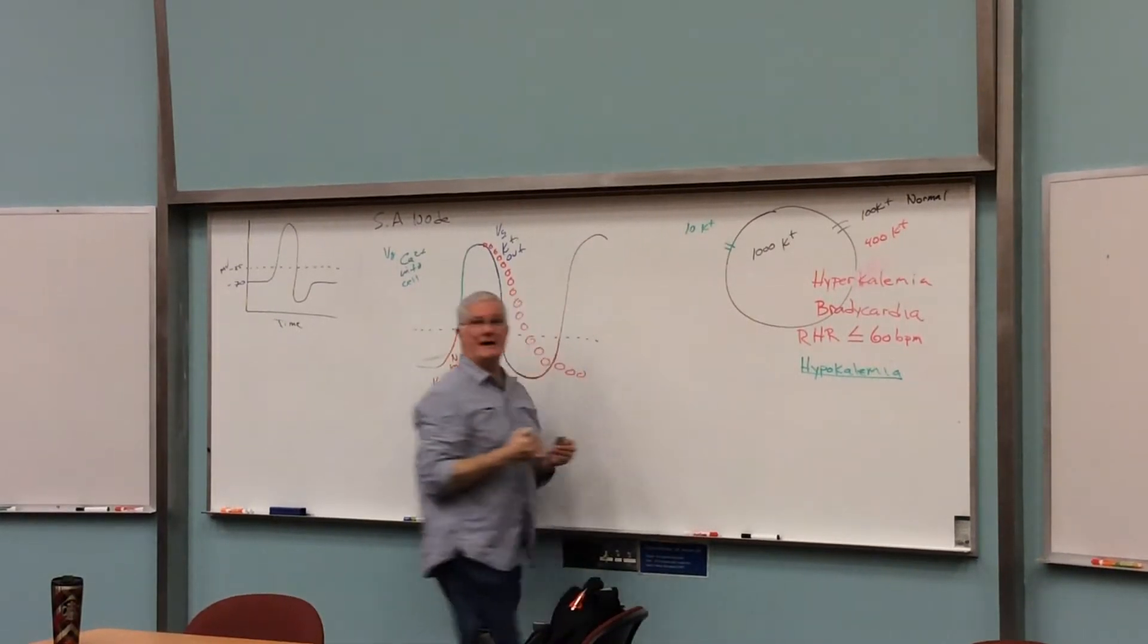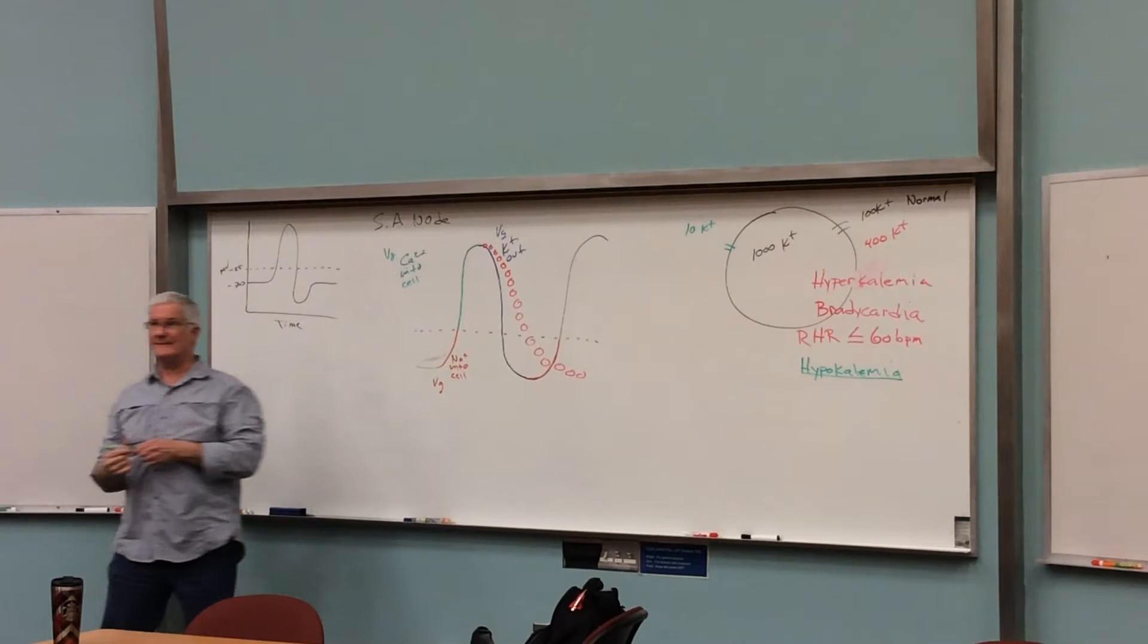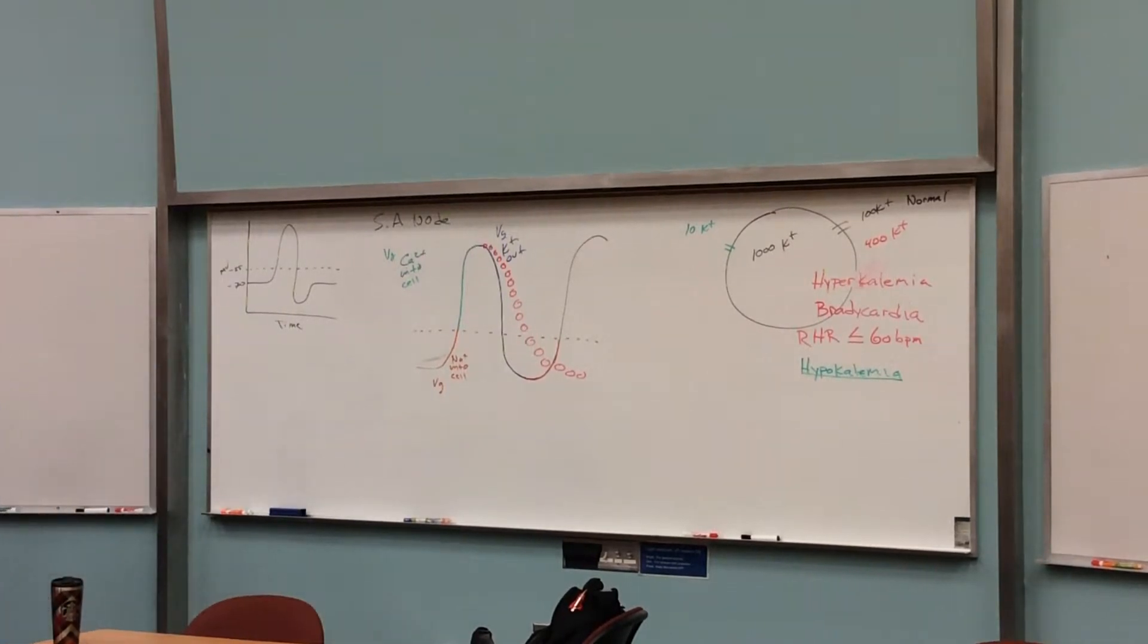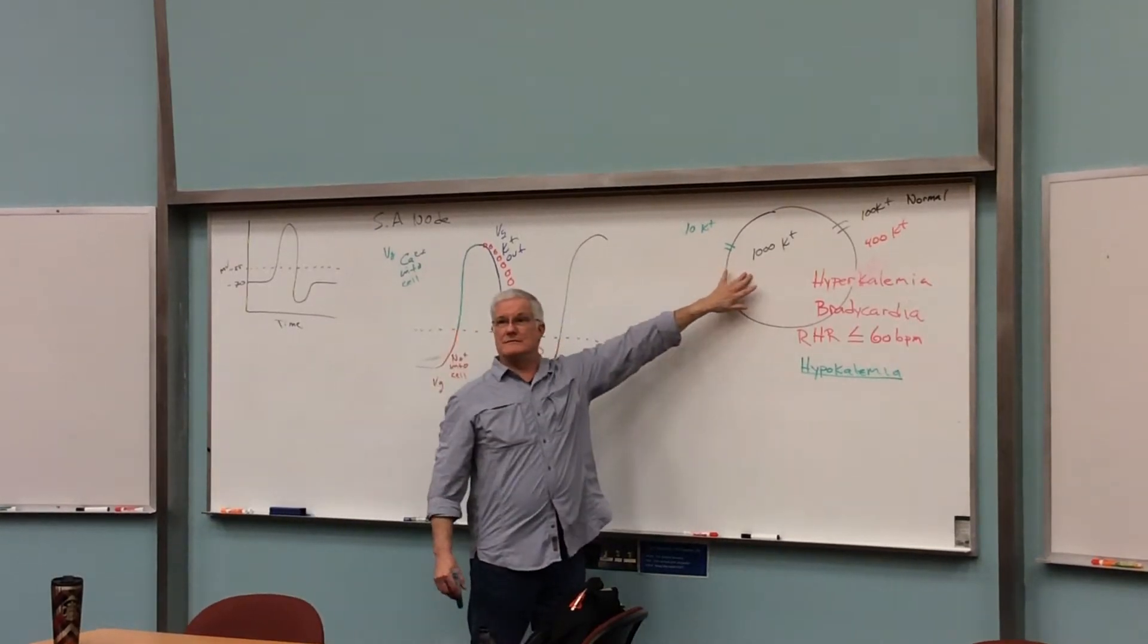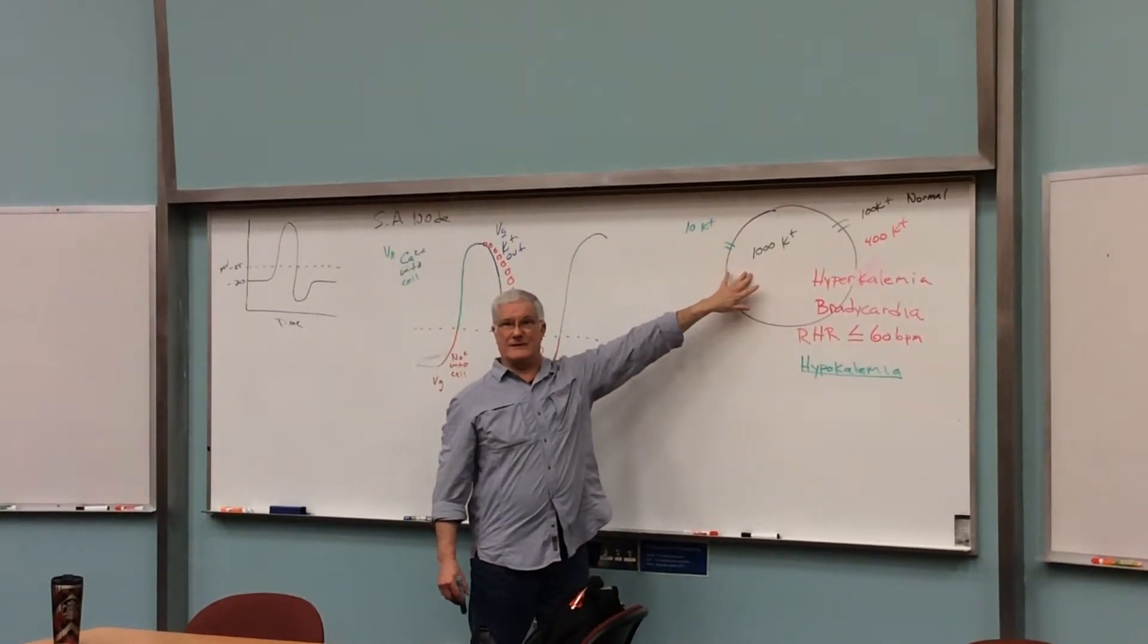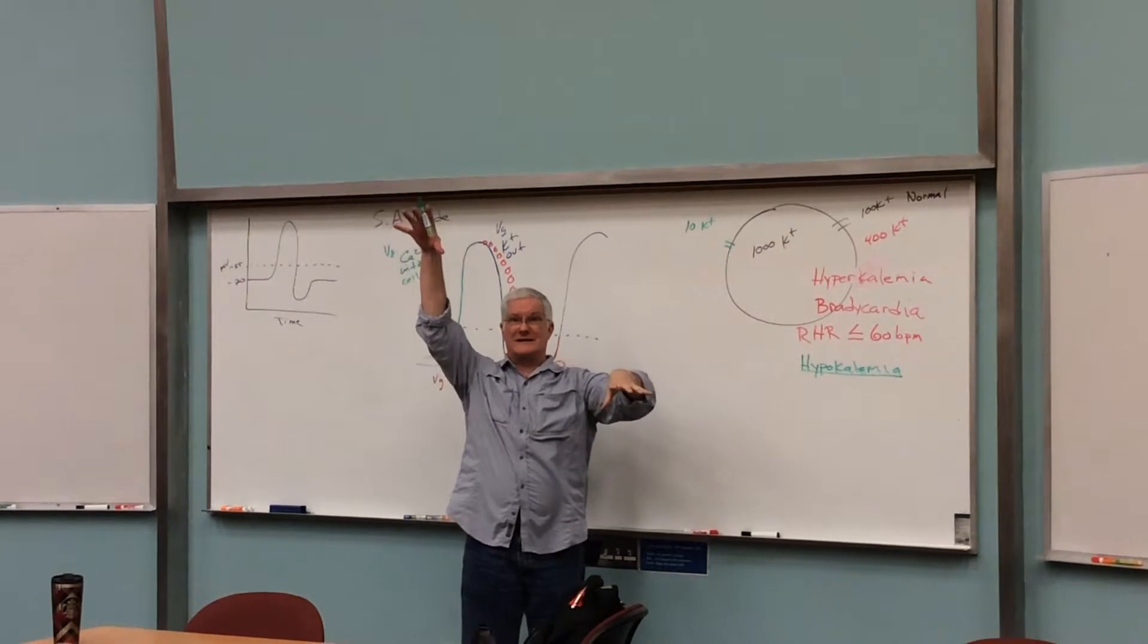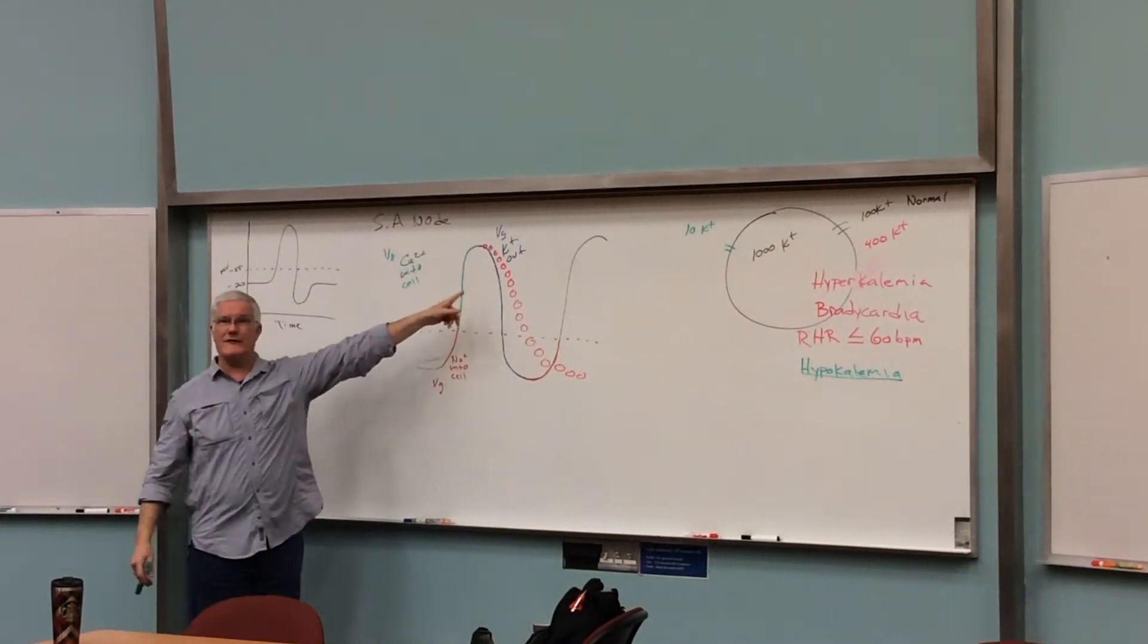Yes, these are fictitious amounts, but it's the concept that's important. What would that do to the potassium diffusion rate? Speed it up. Speed it up because you've now increased the gradient. What would that do to this looking profile?